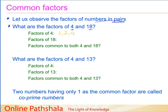Any other factor you can think for the number 4? That is it — these are the factors of the number 4. Now let us find the factors of the number 18. The factors of number 18 are: 1, then 2 (since 2 nines are 18), then 3 (since 3 sixes are 18), then 6, we also have 9, and then 18 itself is a factor.